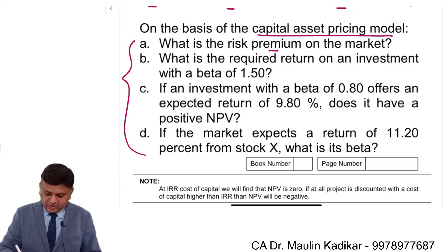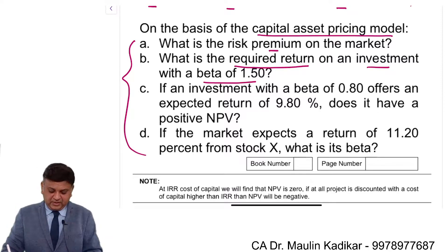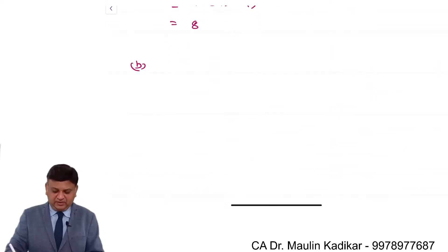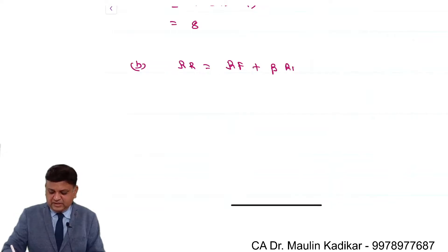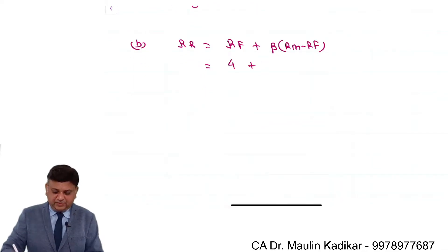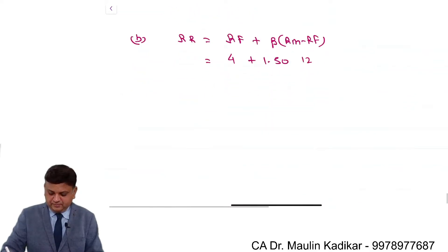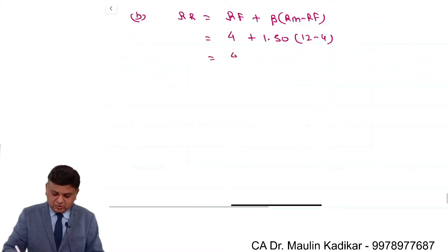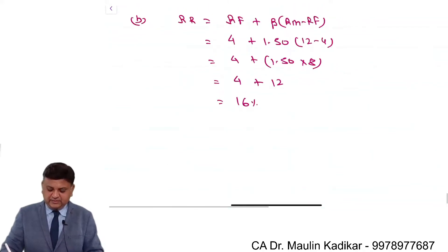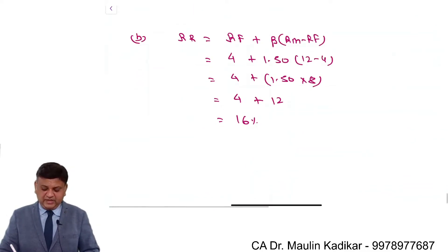Part B of the question: what is the required return on an investment with a beta of 1.50? The required rate of return is RF plus beta into (RM minus RF). The risk-free rate is 4, beta is 1.50, RM is 12, RF is 4. So it is 4 plus 1.50 into 8, which gives 4 plus 12, that comes to 16%. That is the way we can compute the required rate of return.